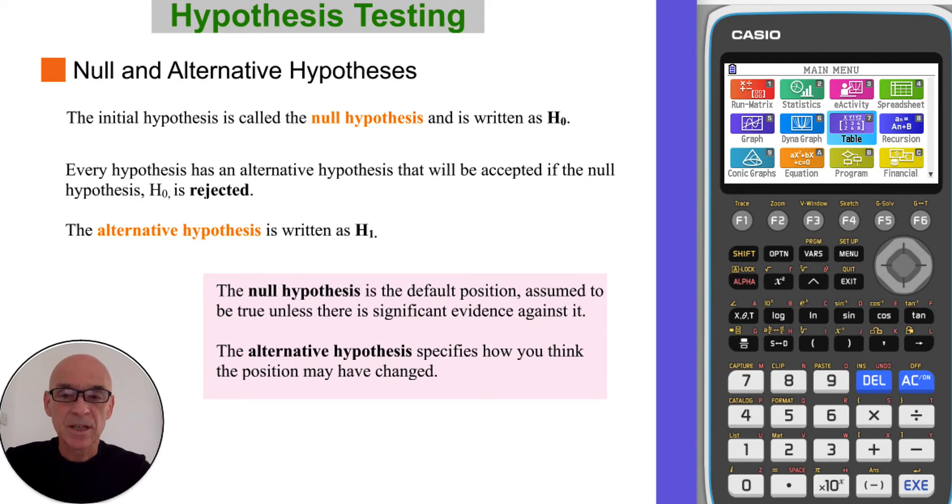So the initial hypothesis is called the null hypothesis and it's denoted or written as H0. The null hypothesis is the default position assumed to be true unless there is significant evidence against it. Every null hypothesis has an alternative hypothesis that will be accepted if the null hypothesis H0 is rejected. The alternative hypothesis is written or notated as H1.